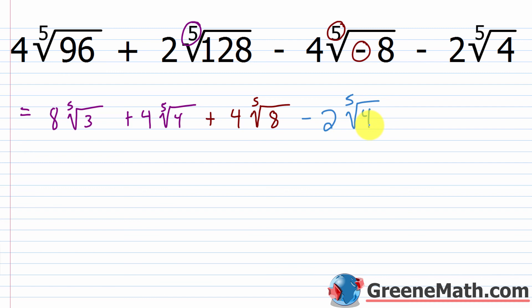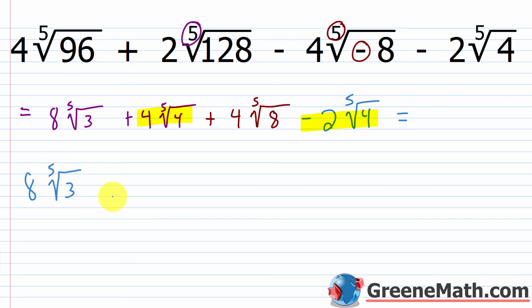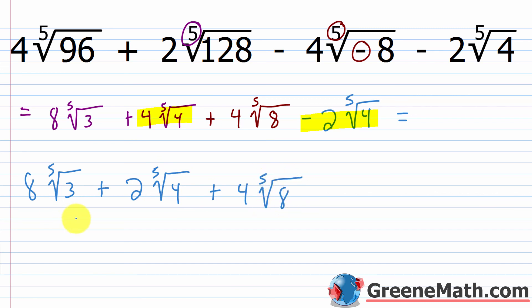So I only have like radicals for the 5th root of 4 terms. Combining what we can: we have 8 times the 5th root of 3, then plus 4 minus 2 which is 2 times the 5th root of 4, then plus 4 times the 5th root of 8. These are not like radicals with each other, so there's nothing else I can do to combine or simplify any further. That's the final answer.